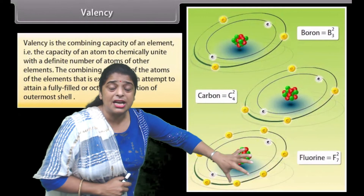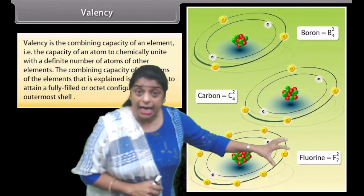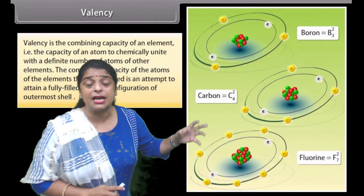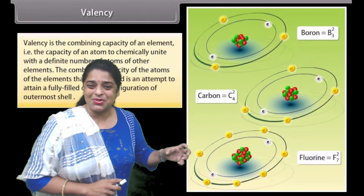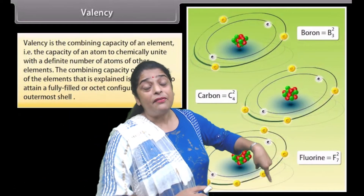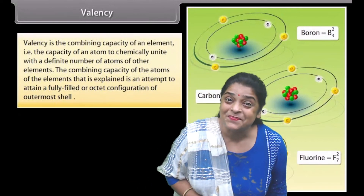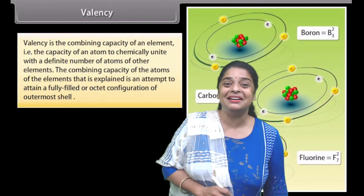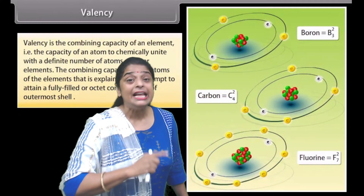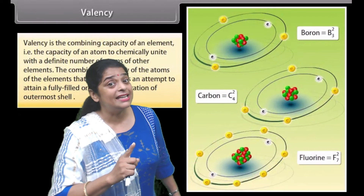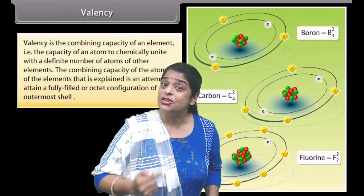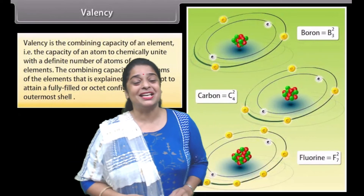When a shell is completed with 8 electrons — that is, in the case of neon — neon has atomic number 10, so its electronic configuration is 2 and 8. After neon, the element is sodium with atomic number 11. The electronic configuration of sodium will be 2 in the first shell, 8 in the second shell — that makes 10 — and the one remaining electron shifts to the third shell.